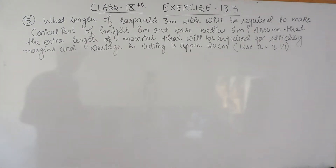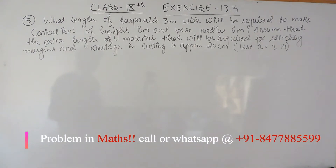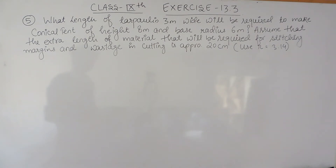The question says: what length of tarpaulin 3 meters wide will be required to make a conical tent of height 8 meters and base radius 6 meters? Assume that the extra length of material required for stitching, margin, and wastage in cutting is approximately 20 centimeters.